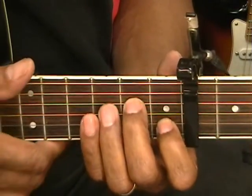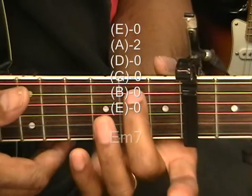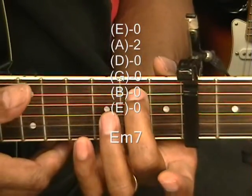E minor 7 will be played by just placing one finger on the E string second fret.